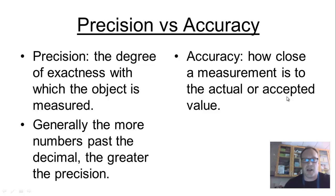Precision versus accuracy, how are they different? Well, first of all, when I think about precision, this is my definition. It's the degree of exactness with which an object or a substance is measured, and that substance could be a powder, it could be a liquid, it doesn't really matter. And the thing that I like to think about is that generally, the more numbers there are past a decimal point, the greater the degree of precision is.